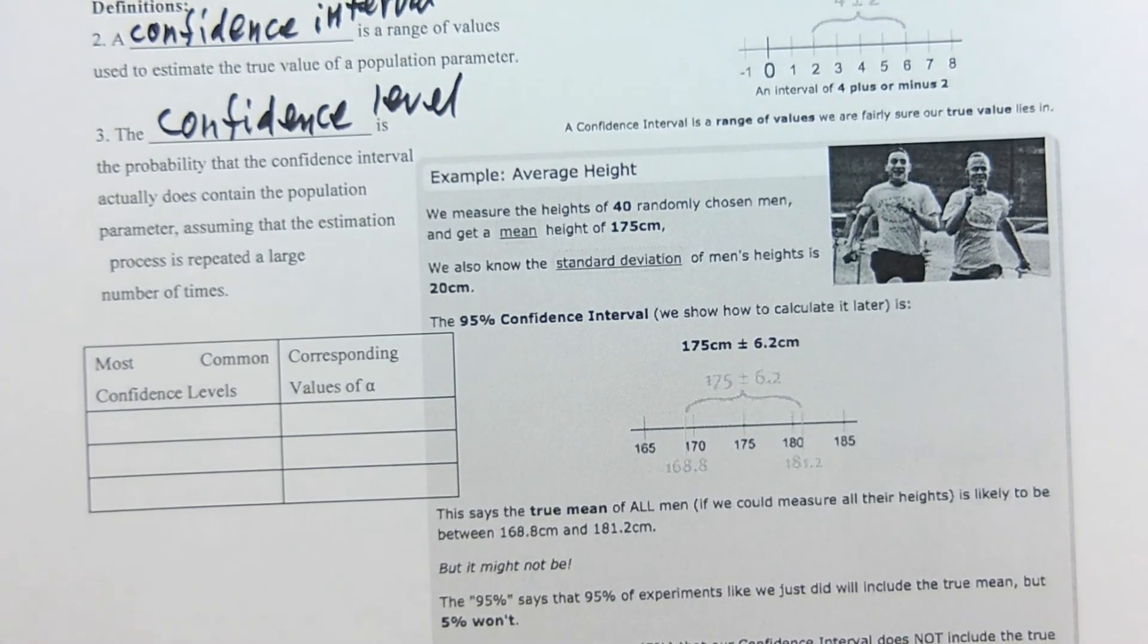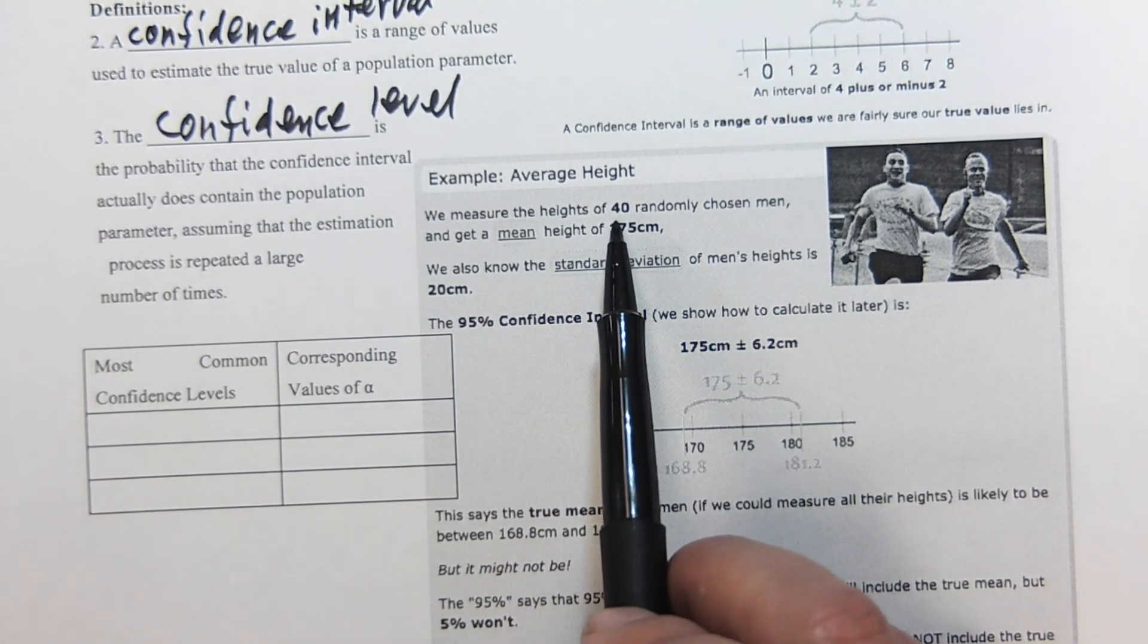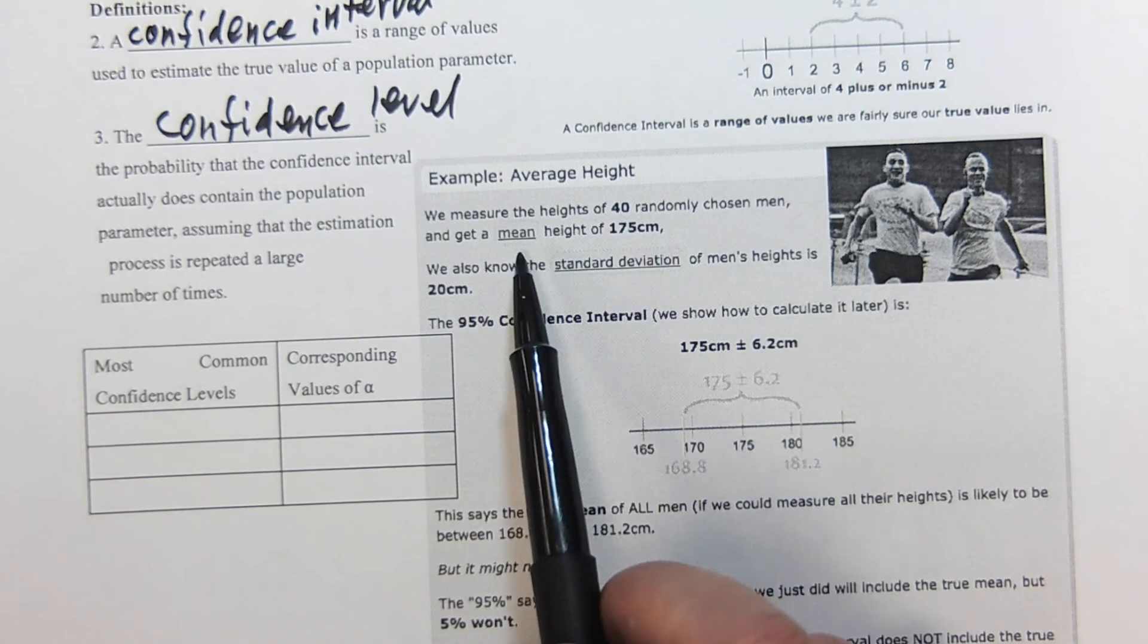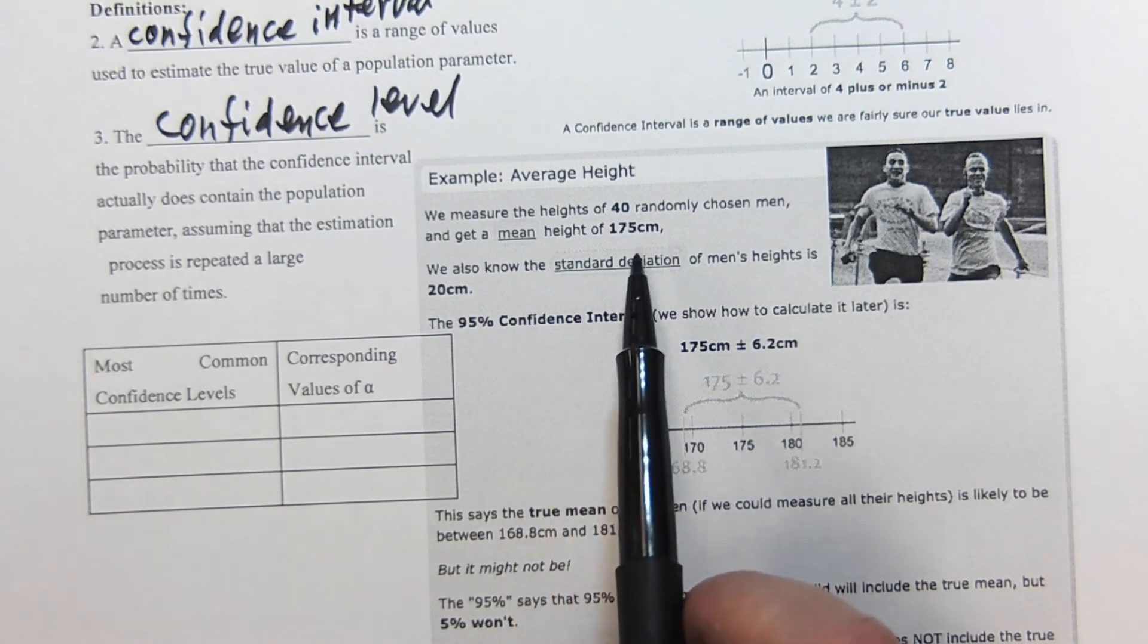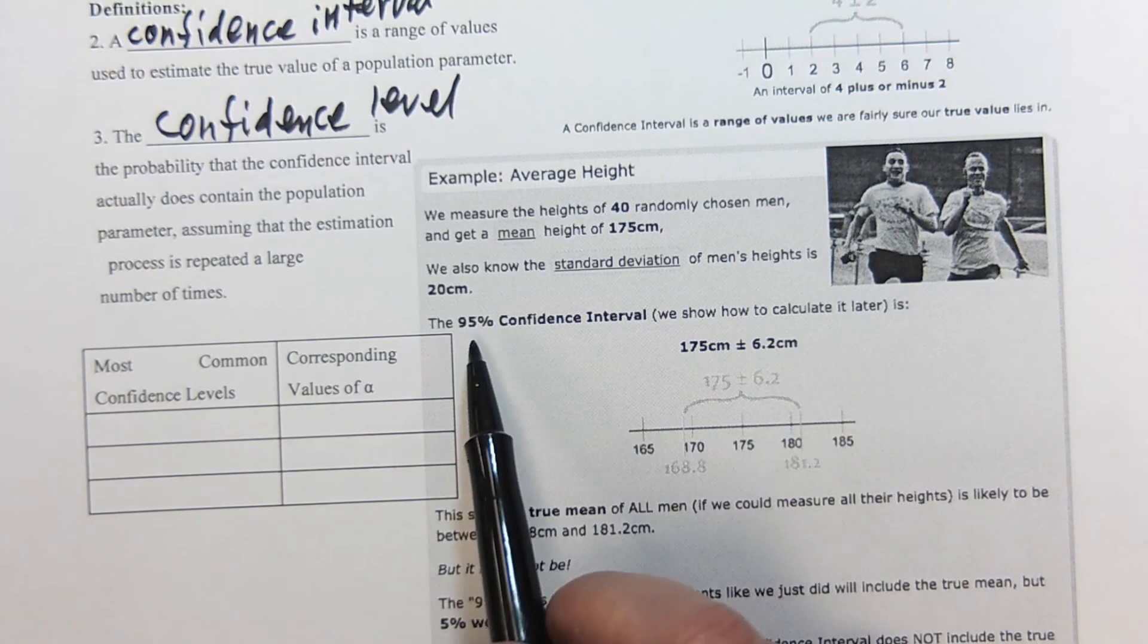The confidence level is the probability that the confidence interval actually does contain the population parameter, assuming that the estimation process is repeated a large number of times. For example, the average height.